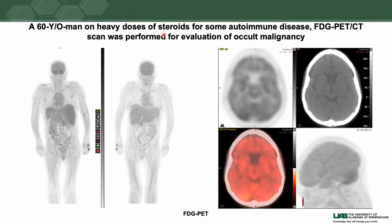Here is an example: a 60-year-old man on a heavy dose of steroids for an autoimmune disease who underwent FDG-PET for evaluation of occult malignancy. When I first saw the posterior and anterior MIP image I thought this was an inadequate study, but when you look carefully there is no significant extra-axial activity in the hands, and the liver uptake is good — however the brain uptake is almost comparable to the liver.